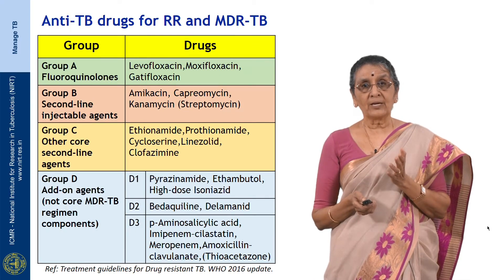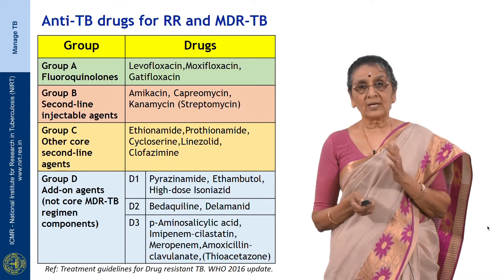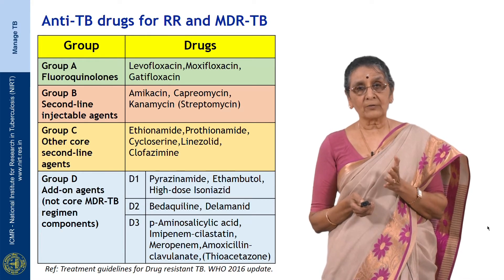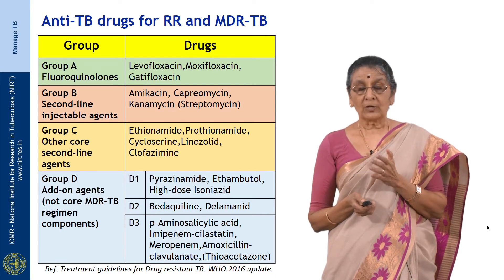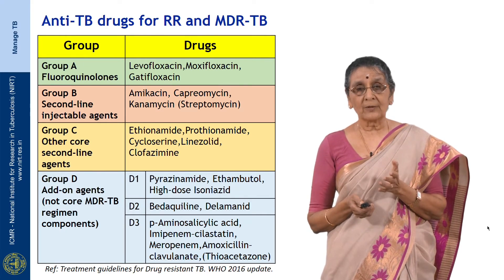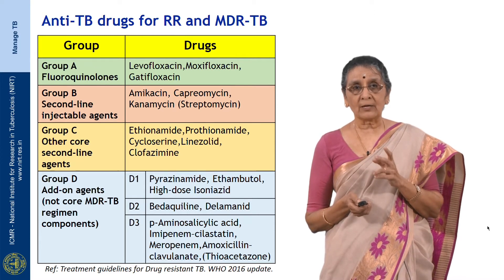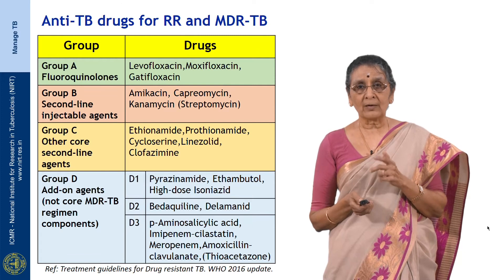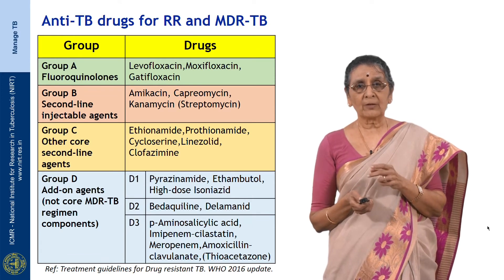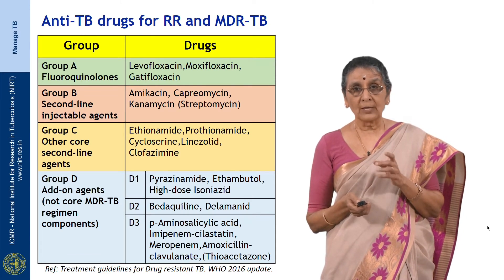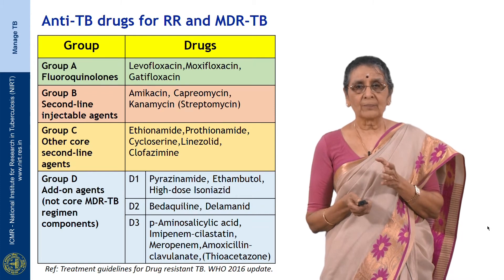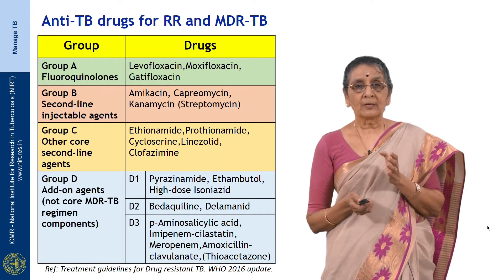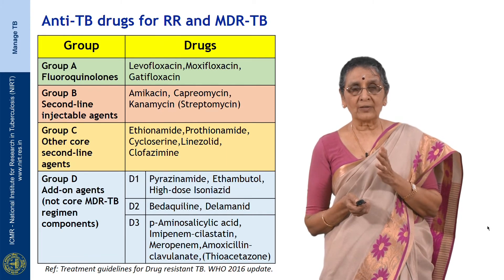The anti-TB drug classification for resistance is slightly different. Currently we have multidrug-resistant tuberculosis. MDR-TB refers to bacteria that are resistant to the 2 key drugs in chemotherapy — rifampicin and INH, both bactericidal drugs. When patients develop organisms resistant to both rifampicin and INH, they are called MDR-TB patients, and the classification is slightly different.